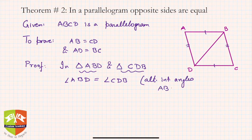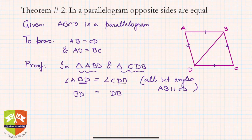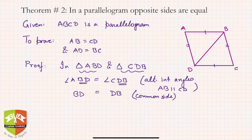Similarly, the next: BD side is equal to DB side. Why? They are common side.